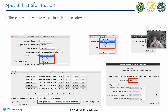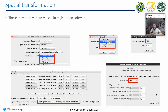Why am I telling you this? Because depending on which software you work with, you find these different options in pulldown menus — the selection of the transformation you would like to correct for. A general hint: if you observe a misalignment that is just a translation, try to correct for that with just the translation. Don't use the affine transform, even though affine also contains the translation. The idea is to give the software the minimum possibility to do something wrong, to get the best result in the fastest way.